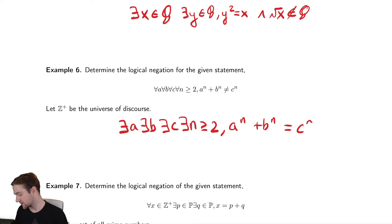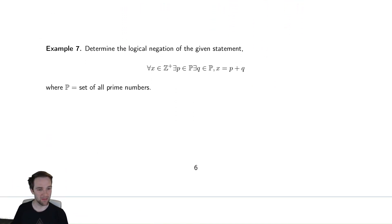The next one is another famous statement. I can never remember the name of this. I think it's the Goldbach Conjecture, but it's saying that every single integer is the sum of two prime numbers. So to negate this, we would again negate all the quantifiers so there exists an integer such that for all prime numbers p and for all prime numbers q that x does not equal p plus q.